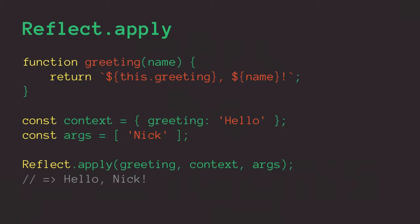Another Reflect method is apply. If I have a method like this greeting function, Reflect.apply gives us a way to call that method and specify its context and any arguments to pass. I have a greeting method that takes a name, looks for a greeting on its context, then logs it out. I set context to an object with greeting 'hello', and the arguments are an array with one string. When I call Reflect.apply with greeting, that context, and those arguments, I see 'hello, Nick'. We already have Function.apply and Function.call — I'll get into why we need Reflect.apply a bit later.